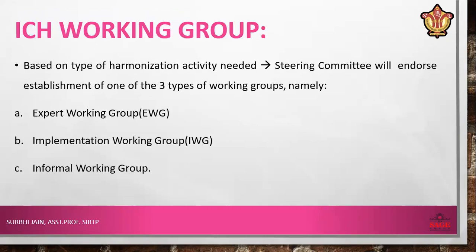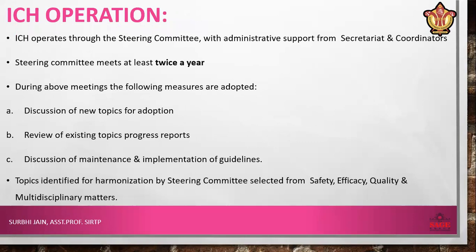There are basically three types of working groups established by ICH: the Expert Working Group, the Implementation Working Group, and the Informal Working Group. ICH operations function through the Steering Committee with administrative support from the Secretariat and Coordinators. The Steering Committee meets at least twice a year, during which they discuss new topics for adoption, review existing topics and progress reports, and discuss the maintenance and implementation of guidelines.